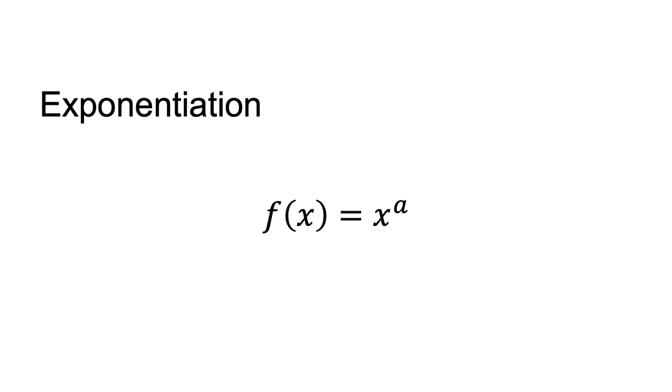Exponentiation is a mathematical operation where a number is multiplied by itself a certain number of times. Exponentiation is written as f of x equals x to the power of a. That is, x is multiplied by itself a times.